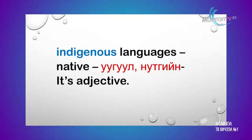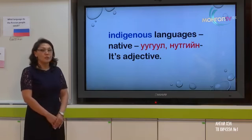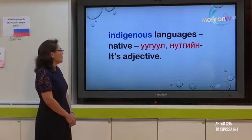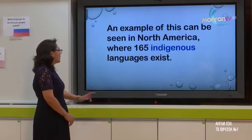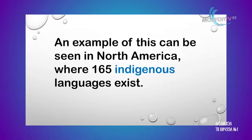The third word is 'indigenous'. It means native — for example, Mongolian is our indigenous language. It's an adjective. The sentence in the text is: 'An example of this can be seen in North America, where 165 indigenous languages exist.' Here in Mongolia we also have many indigenous languages.